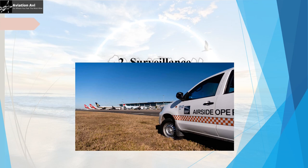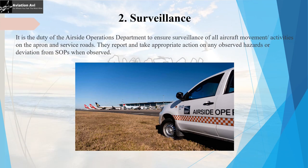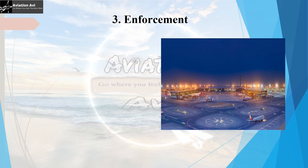The second function of the air side operations team is surveillance. It is the duty of the air side operations department to ensure surveillance of all aircraft movement and activities on the apron and service roads. They report and take appropriate action on any observed hazards or deviations from SOPs. The third function is enforcement — the department is responsible for enforcing ICAO and DGCA regulations at air side, as well as the airport's own air side safety regulations.